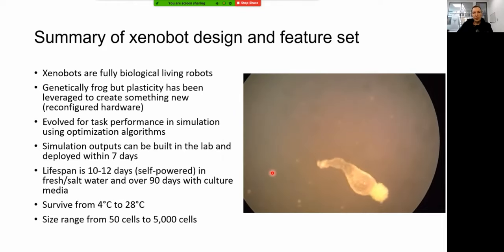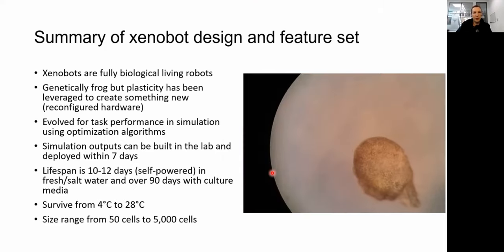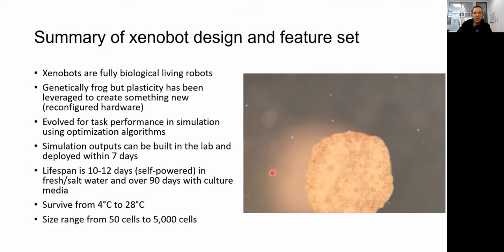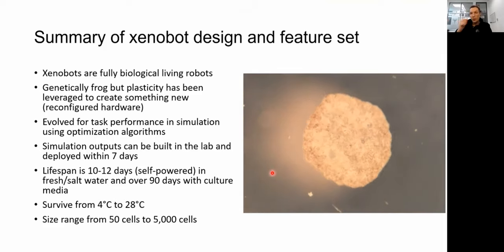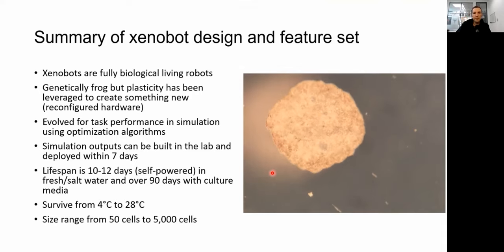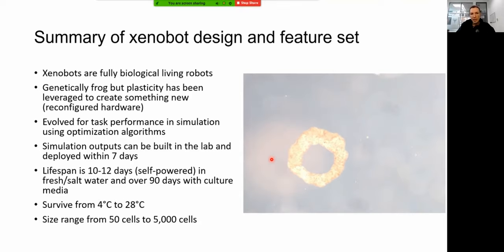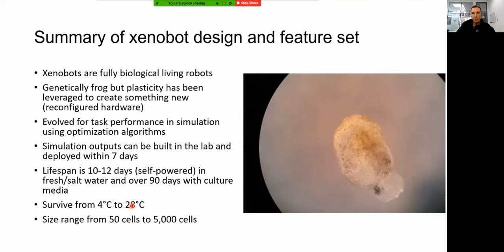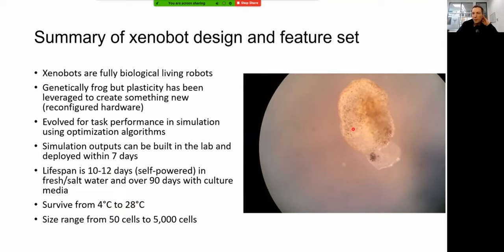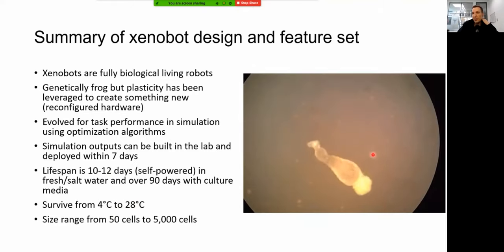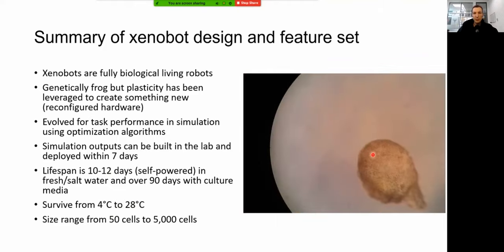As a summary: Xenobots are fully biological living robots. They're genetically frog — these are frog cells — but we've leveraged plasticity to create something new. We've reconfigured the hardware and evolved these using a simulator. We build them in the lab in about seven days, and they live 10 to 12 days at a wide variety of temperatures. We can build them quite large and quite small, and you're seeing a smattering of the different types of complex shapes we're able to produce using this design process.